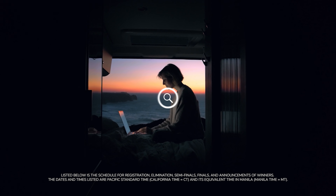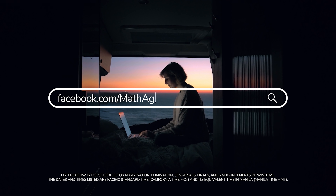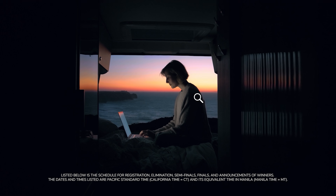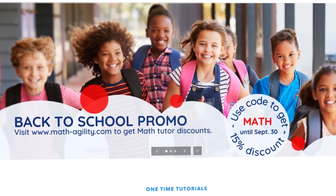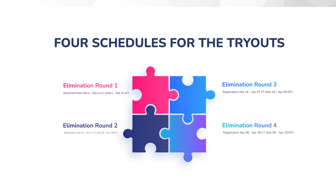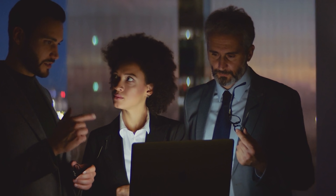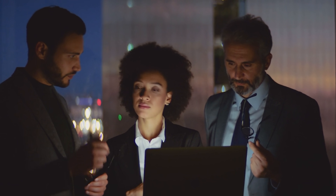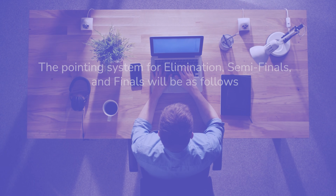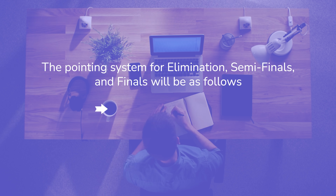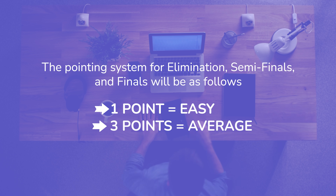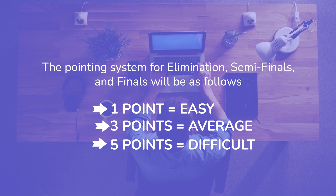To register, visit Math Agility's Facebook page, click the link, and fill up the online registration form. There will be four schedules for the tryouts to get through the elimination round. All contestants' scores will be ranked and the competition officials will determine the median score. All individuals who got scores greater than or equal to the median score will go to the semi-final round.